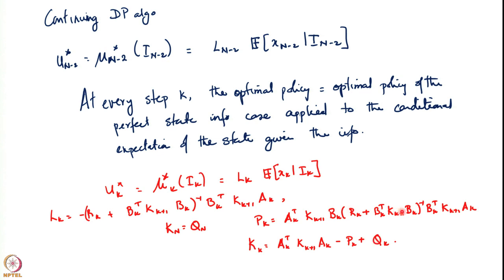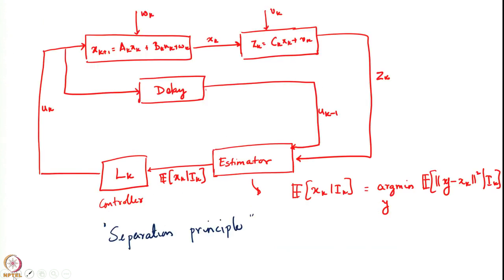That is basically our method for computing the optimal control. What we would like now is a similar method to compute this particular quantity — the conditional expectation of x_k given i_k. If the conditional expectation of the state given the information could be computed using the previous estimate of the previous state given the previous information, that is what we would like.